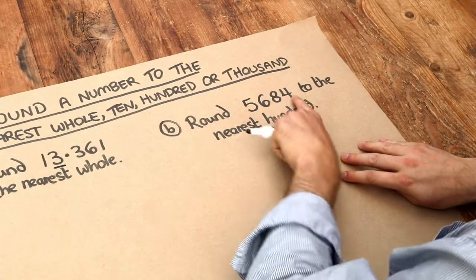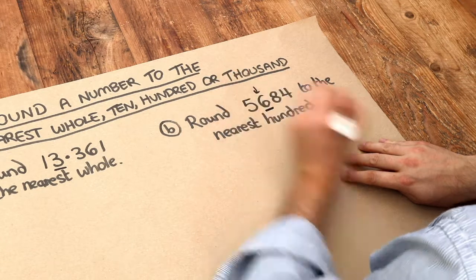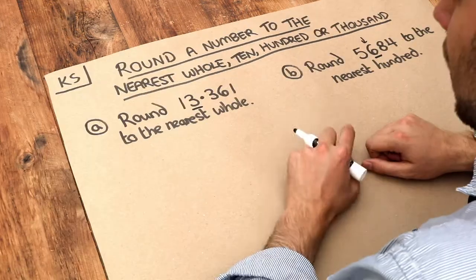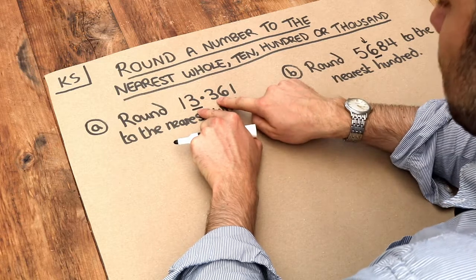Whereas this, if I'm rounding this to the nearest hundred, the hundreds digit is here, so I'm going to underline this. Now what we do is we always look just after that underlined digit to the right.